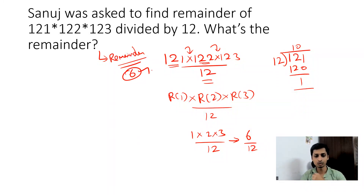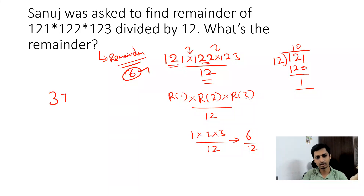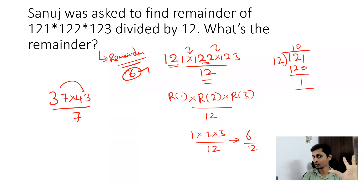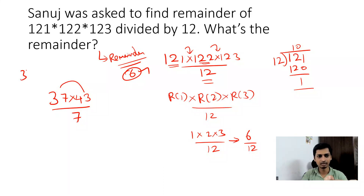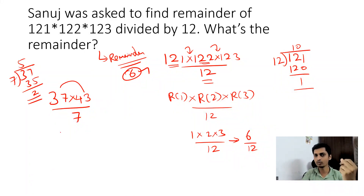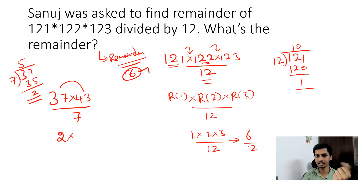This looks very simple, and you can expect this kind of question a lot in competitive exams. Let me give one more example: 37 × 43 divided by 7. You don't want to multiply these two numbers, so we apply the same technique. For 37 ÷ 7: 5 × 7 = 35, so the remainder is 2.